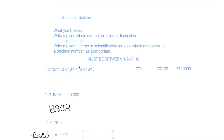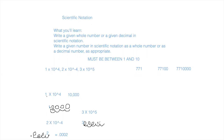For this last example, we have 3 times 10 to the positive fifth. We pretend there's an invisible decimal point after the 3 and move it over five times to the right: one, two, three, four, five. Each dip gets a zero, so our final answer is 300,000.